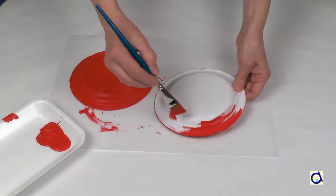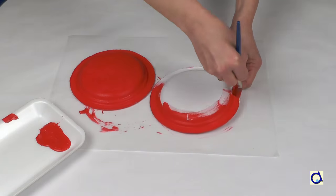For a nicer finish, you can add a coat of acrylic varnish on both plates you've painted red.